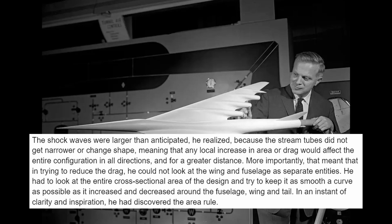NASA says, quote: the shockwaves were larger than anticipated, he realized, because the stream tubes did not get narrower or change shape, meaning that any local increase in area or drag would affect the entire configuration in all directions and for a greater distance. More importantly, that meant that in trying to reduce the drag, he could not look at the wing and fuselage as separate entities. He had to look at the entire cross-sectional area of the design and try to keep it as smooth a curve as possible as it increased and decreased around the fuselage, wing, and tail. In an instant of clarity and inspiration, he had discovered the area rule.